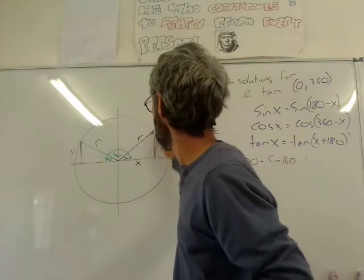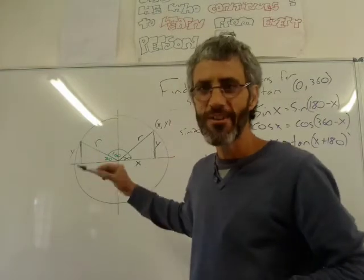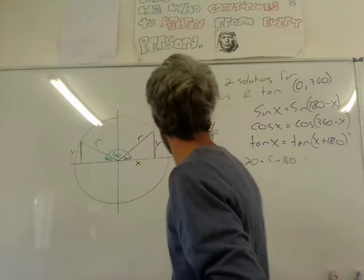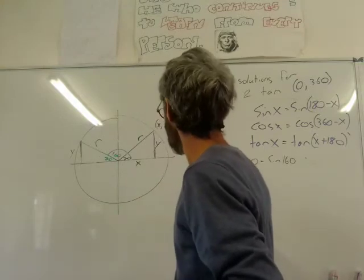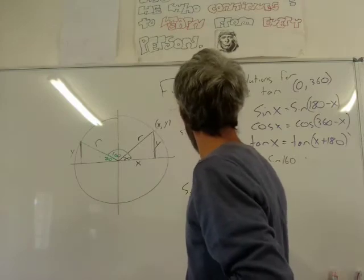This is 20. This is 20. The radius is the same. This is going to be equal to that. And prove that they're congruent. We're not going to do that. So what is sine 160? Sine 160 is also going to be y over r. This y over r.